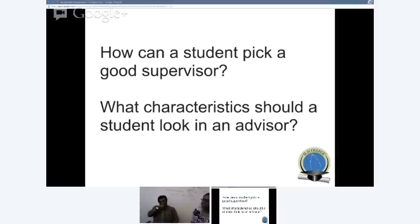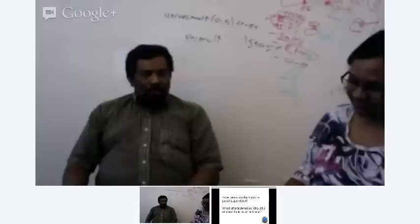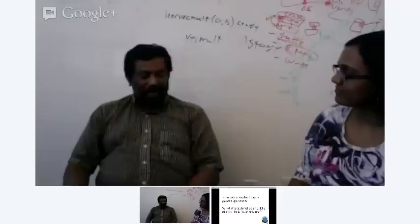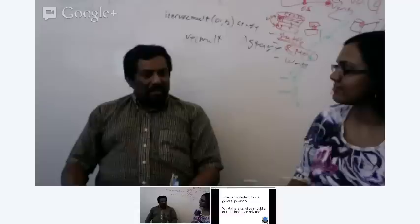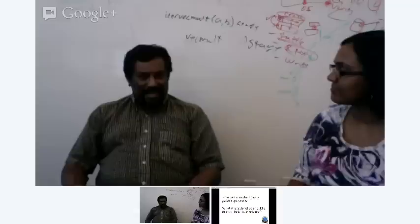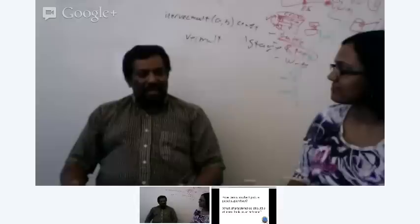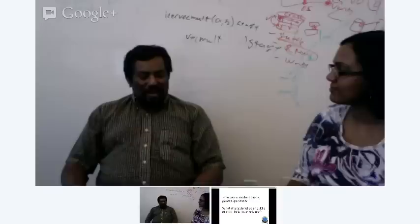Picking the perfect advisor also depends on the school. At Stanford, you're admitted to the department and have a semester to find an advisor. At MIT, a matching is done before you even show up. However, there's still a good possibility of changing advisors or finding your match later. When applying, go look at faculty websites and see whether you have at least an intellectual connection with the faculty.